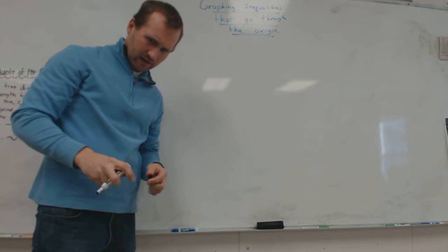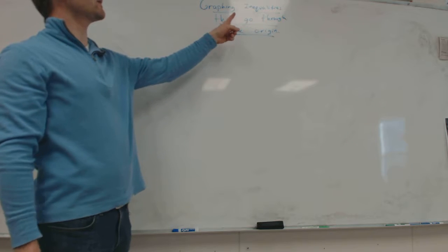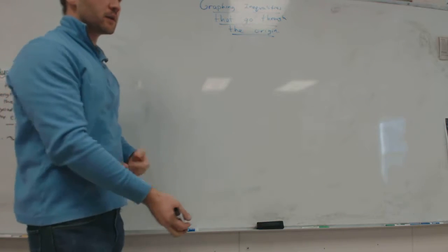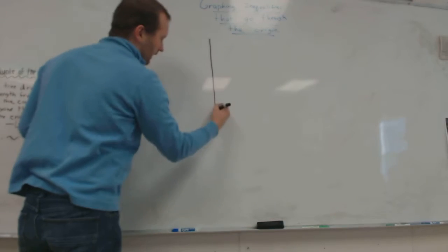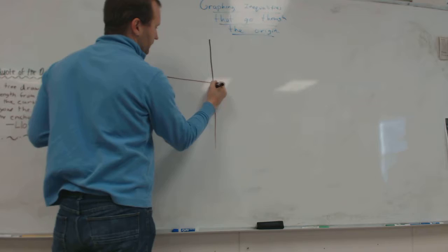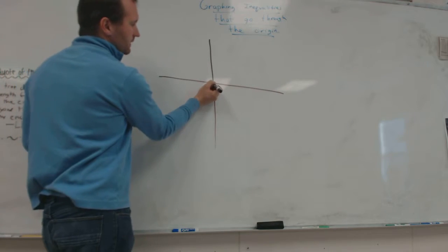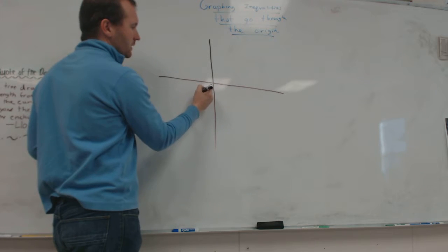It's a little hard to read that especially on the video because of the glare. It says graphing inequalities that go through the origin. So what do I mean by that? If we look at a graph or a coordinate plane, the origin is this point right here. That's called the origin.